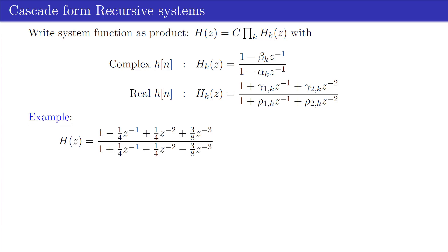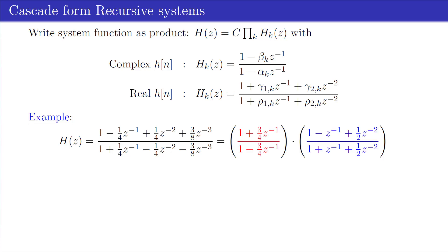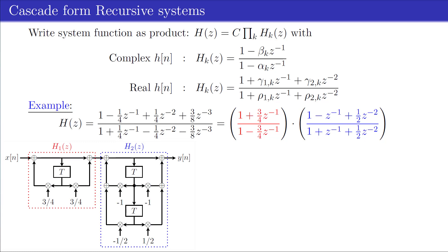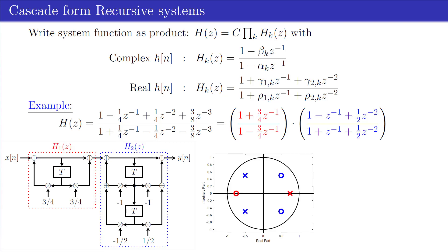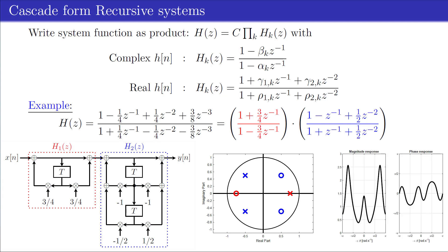As an example, we can factor the system function H of the given third-order recursive filter as a product of a first-order recursive structure H1(Z) in red and a second-order recursive structure H2(Z) in blue. Both filters have real coefficients. This system can be realized as a cascade of the direct form 2 structures of H1 and H2 respectively. The pole-zero plot shows the real pole of the first-order system in red, the complex conjugate pairs of the second-order system in blue, and the magnitude and phase of the frequency response on the right.